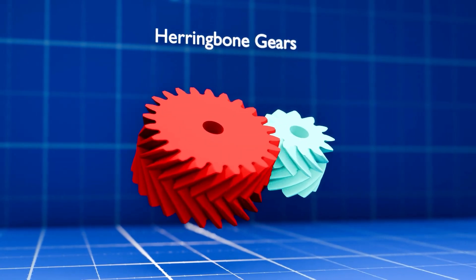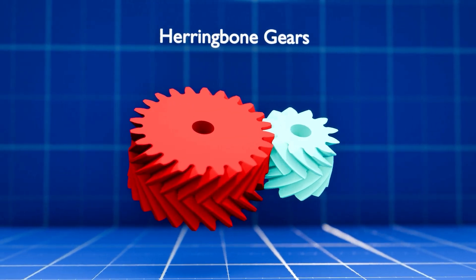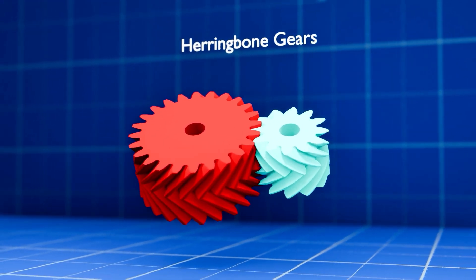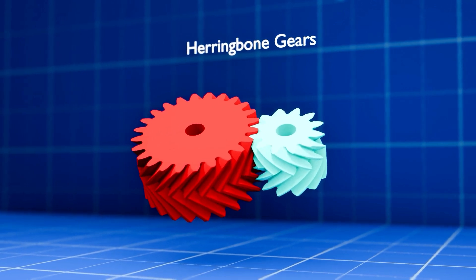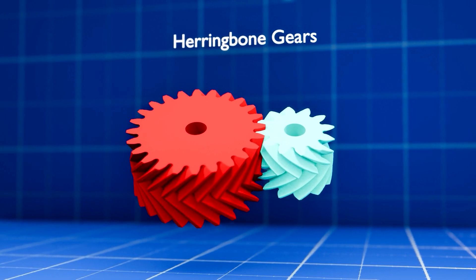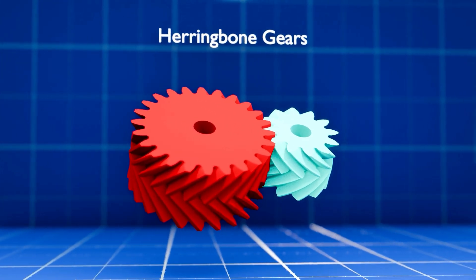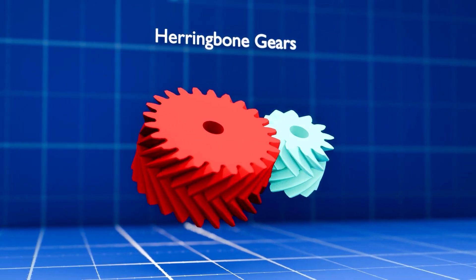The herringbone gear is essentially a double helical gear. It has teeth angled in opposite directions on the same gear wheel, resembling a herringbone pattern. This design has the advantage of canceling out the axial thrust generated by single helical gears, making thrust bearings unnecessary. Herringbone gears are often used in heavy machinery.